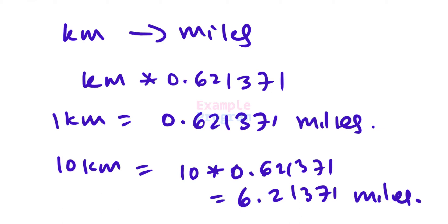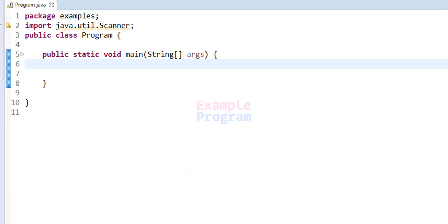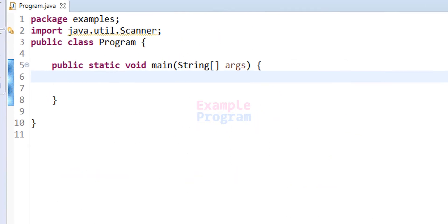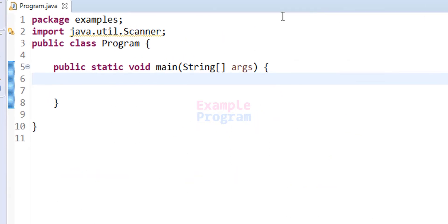So if we have the distance available in kilometers and we want it in miles, we just have to multiply that distance in kilometers with this number and we get the distance in miles. Now let us see how we can write the Java program for this.